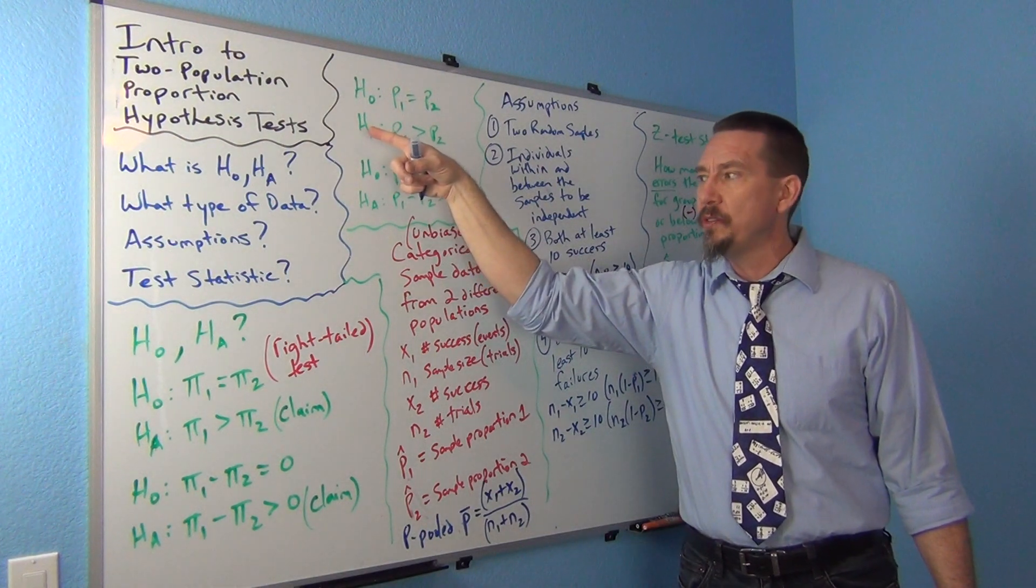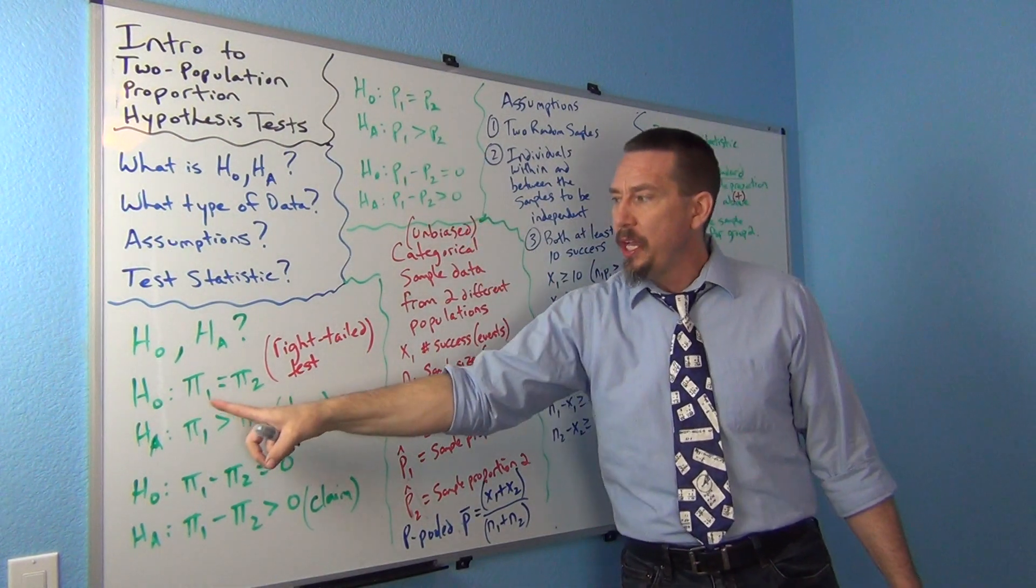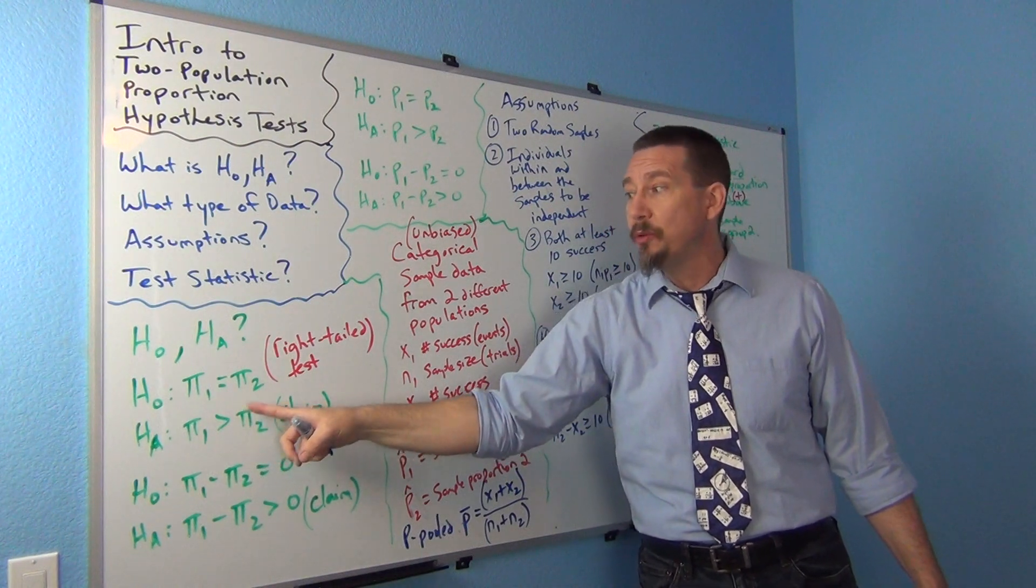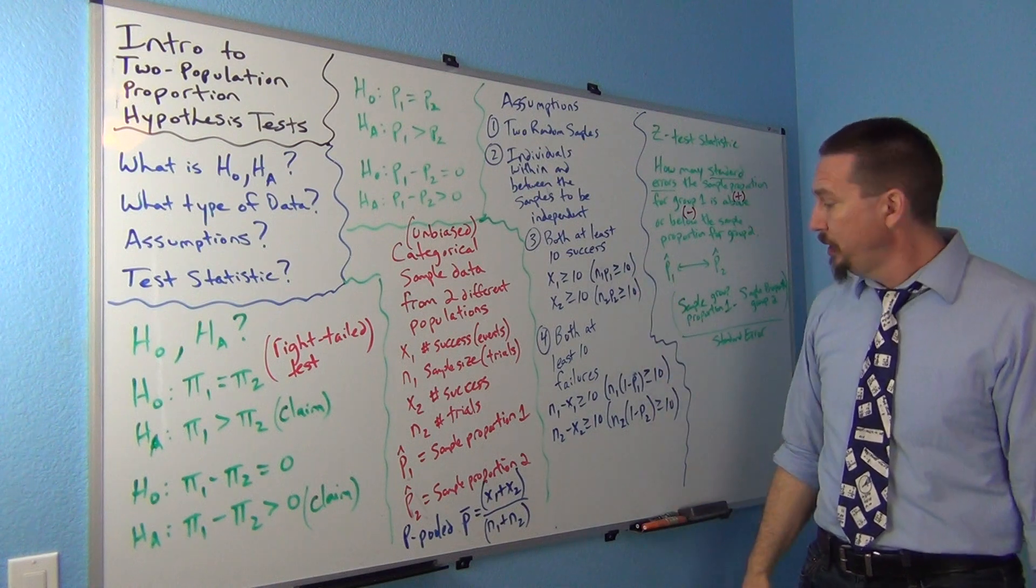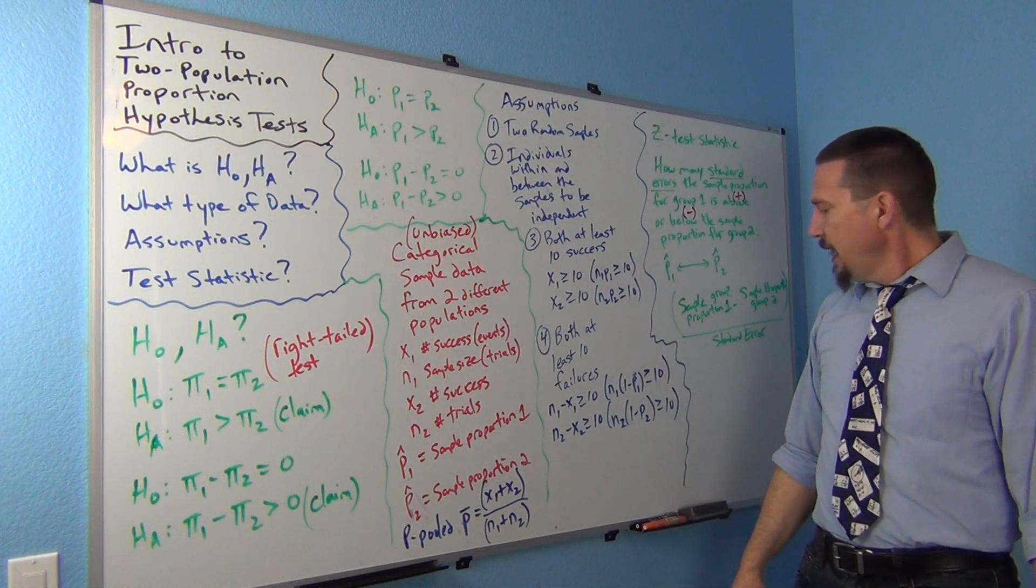Okay? So, don't pool our confidence intervals because in that case, we don't know in the null hypothesis that the two populations are actually equal. We're assuming they're equal in the null hypothesis. So, that's what allows us to pool.